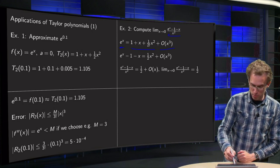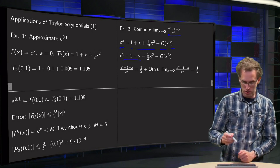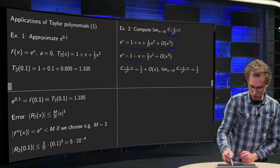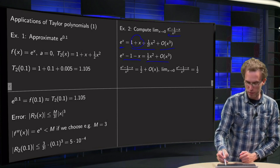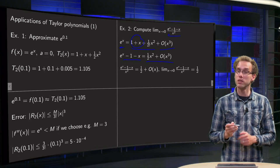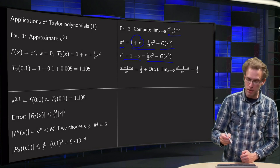And then we can compute e to the power x minus 1 minus x. If we do that, those terms here cancel out, and we get 1 half x squared plus order x cubed. And if we divide by x squared,